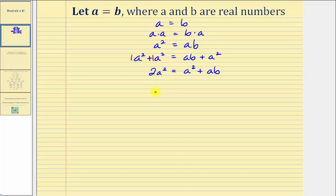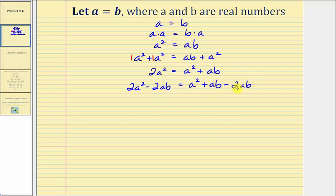Next, we're going to subtract two AB on both sides of the equation, so we have two A squared minus two AB equals A squared plus AB minus two AB. Notice on the right side of the equation, we have two like terms — two AB terms. We have one AB minus two AB, which would be negative one AB, or minus AB. So we have two A squared minus two AB equals A squared minus AB.